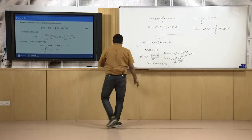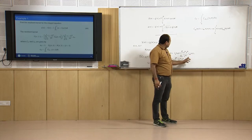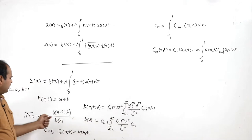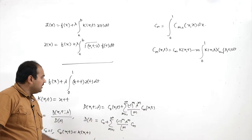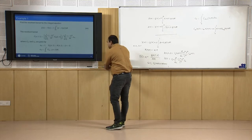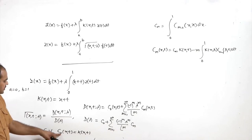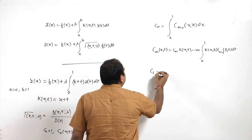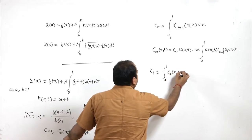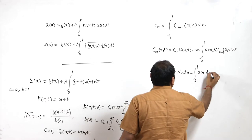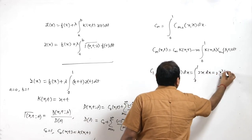With these relations, we can find all coefficients cᵢ and Cᵢ(x,t) to determine D(x,t,λ) and D(λ). Here c₀ = 1, C₀(x,t) = x+t. Small c₁ = ∫₀¹ C₀(x,x)dx = ∫₀¹ 2x dx = [x²]₀¹ = 1.